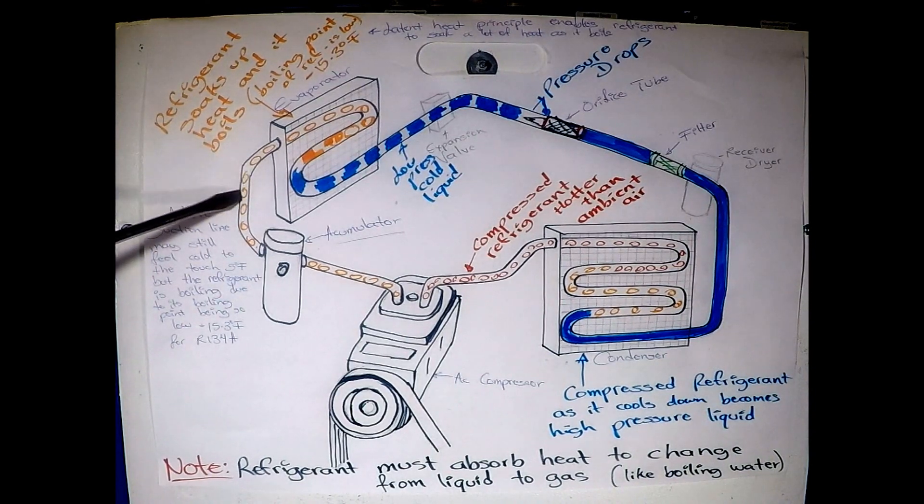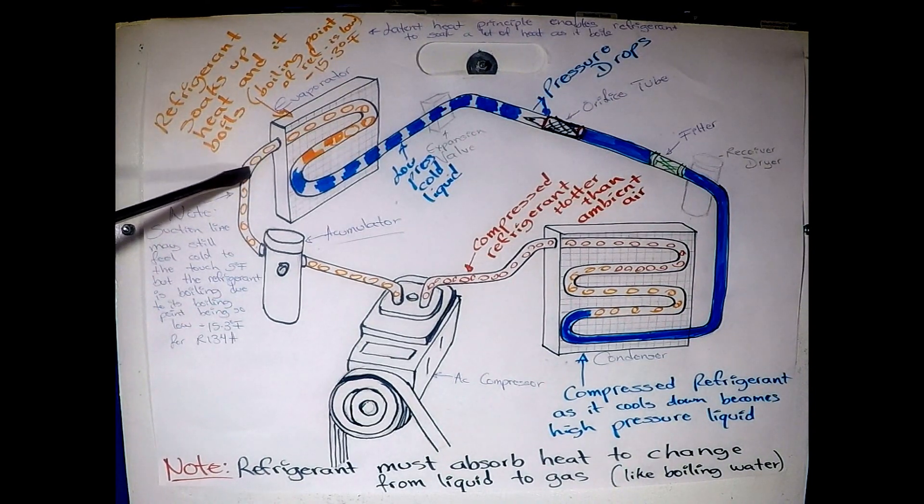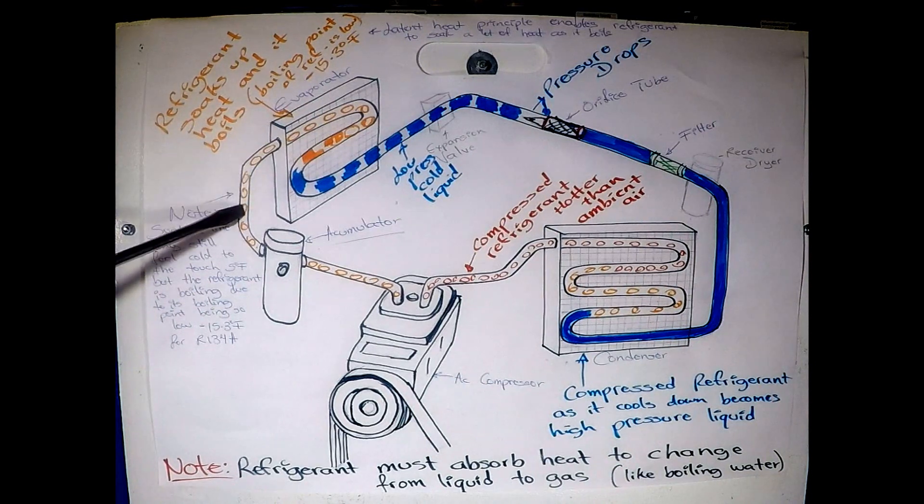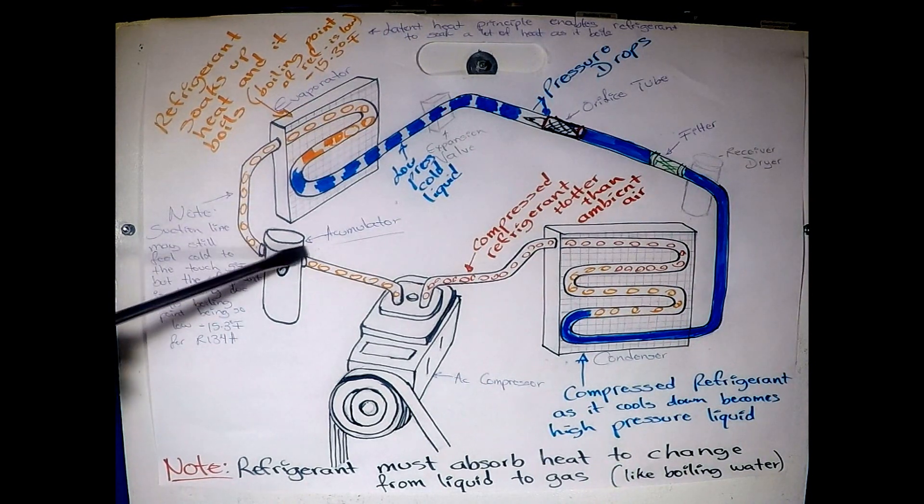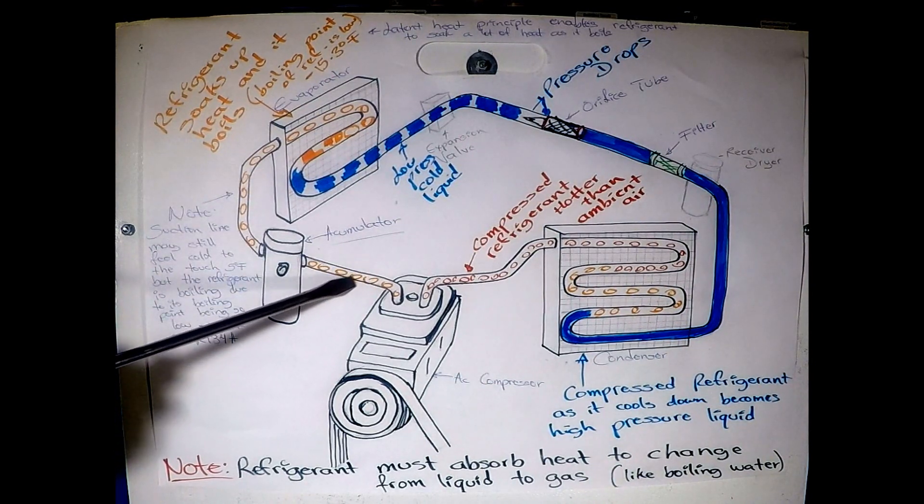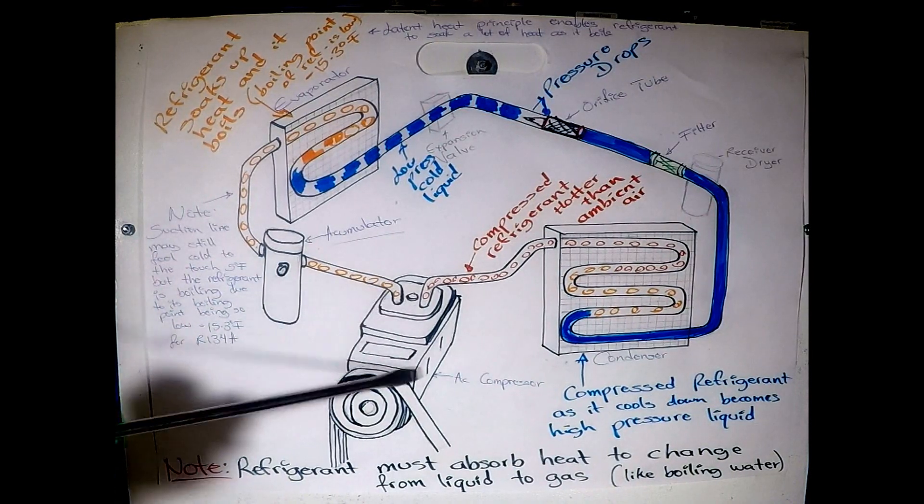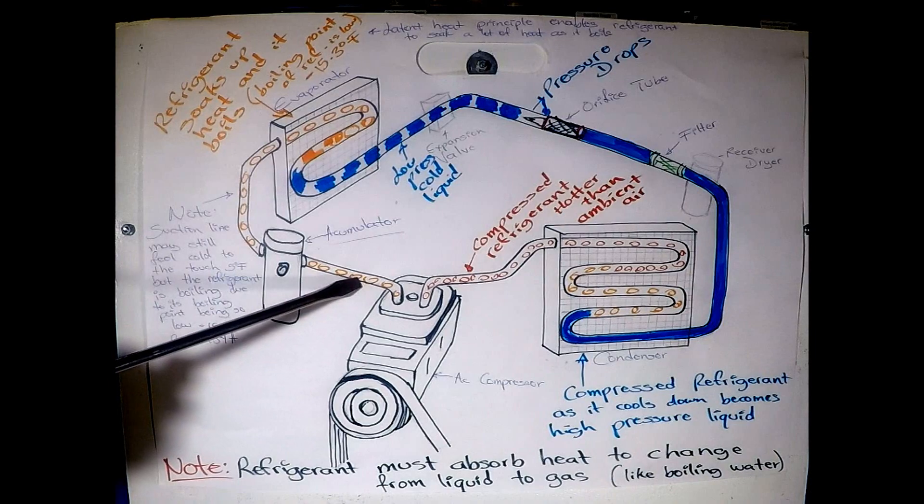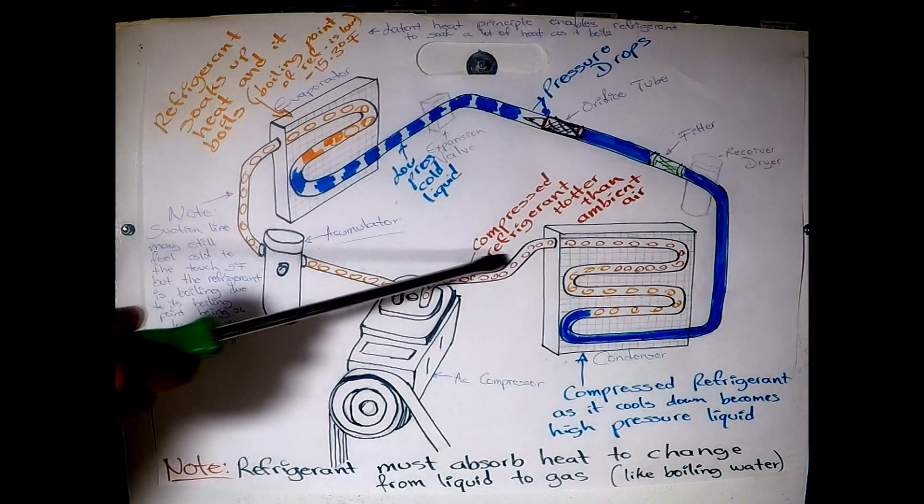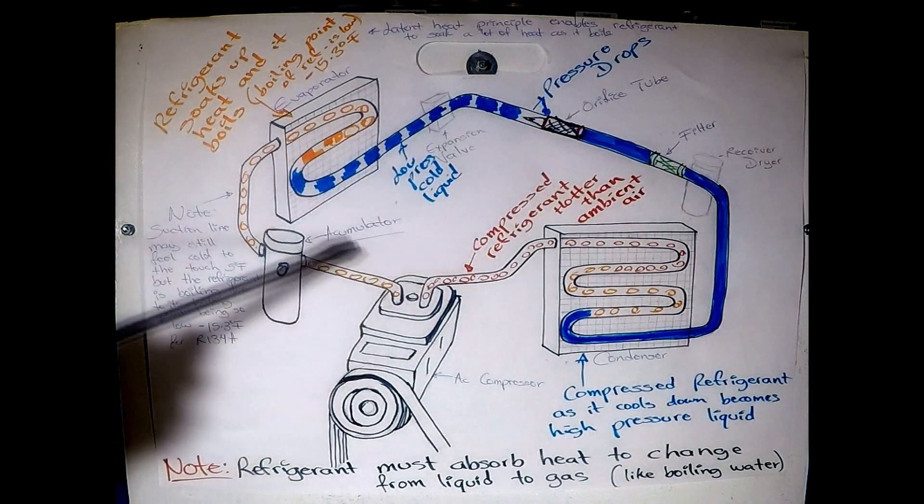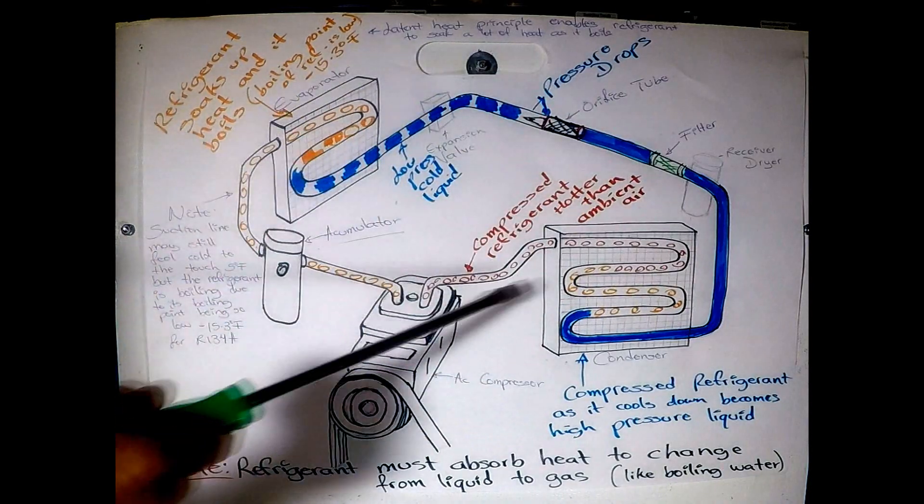But the refrigerant is boiling. So right now we have a low pressure gas that if you have this system, it passes through the accumulator. And it gets sucked in by the compressor because it's operating. So this is your suction line. And the process will start all over again. So this refrigerant is constantly being reused.